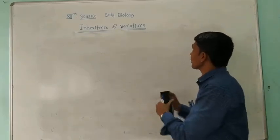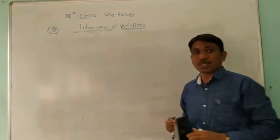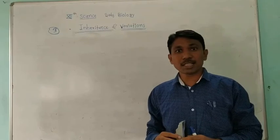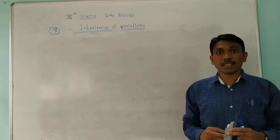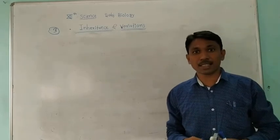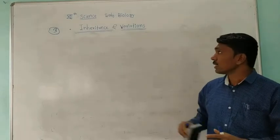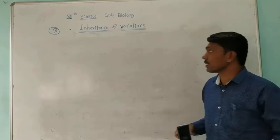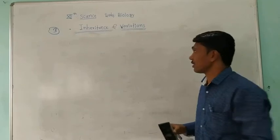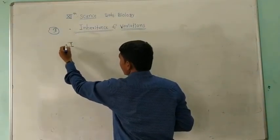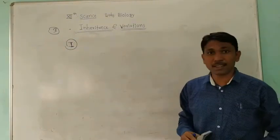Chapter number is 3: Inheritance and Variation. In that chapter, 5 to 6 parts are asked in the state board exam. And in the NEET syllabus, there are 3 to 4 questions asked on the topic of Inheritance and Variation. So let me start the first lecture on this topic.